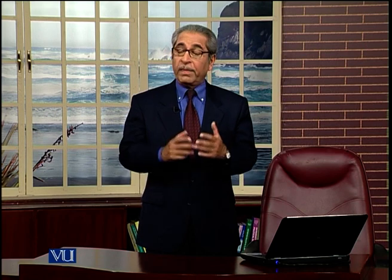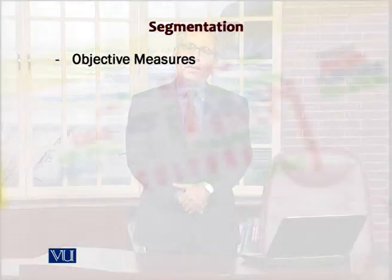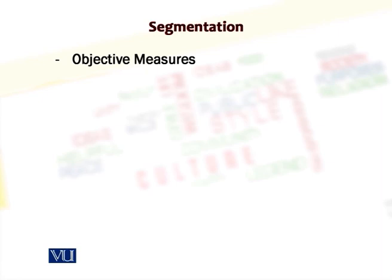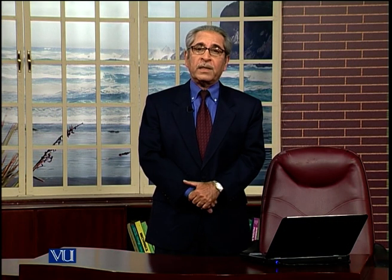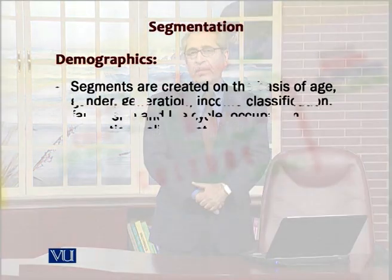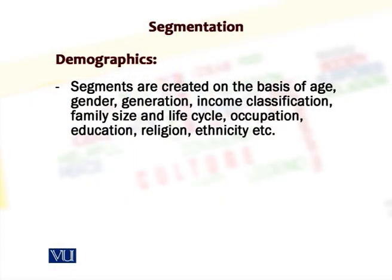There are two different sets of measures which marketers generally deploy when defining segmental lines and further refining them. The first is known as objective measures and the other is known as behavior-specific measures. Objective measures are supposed to be quite reliable and have generalized applicability because they basically dig into demographics.